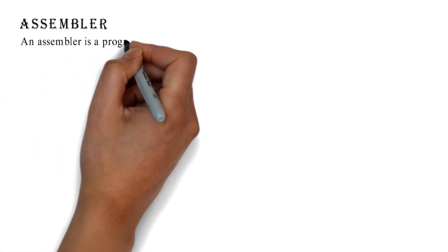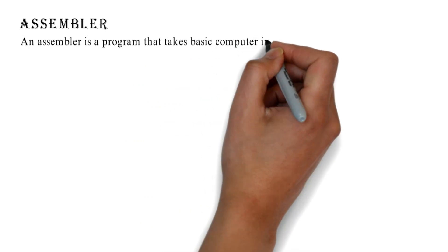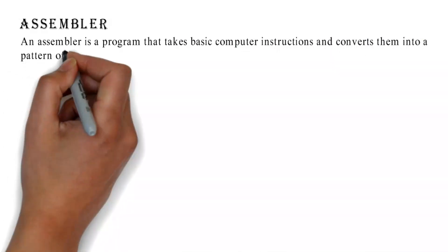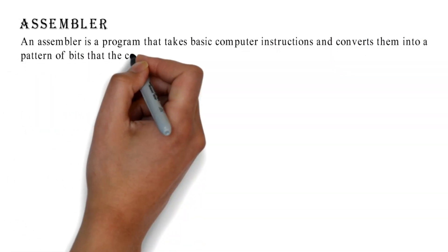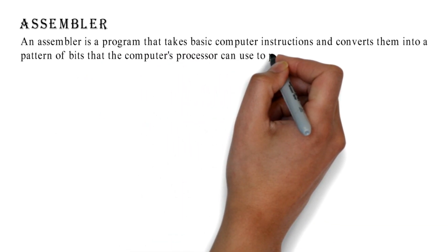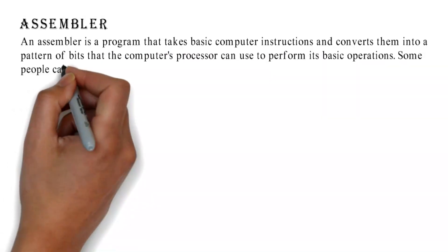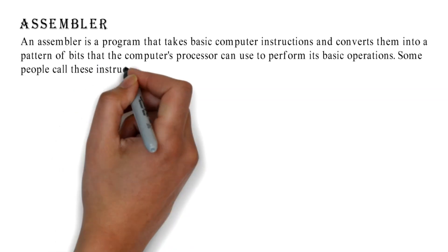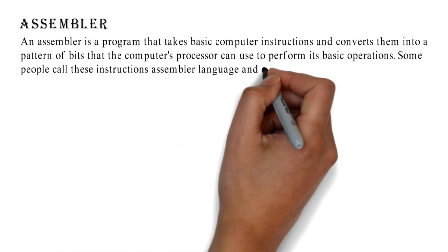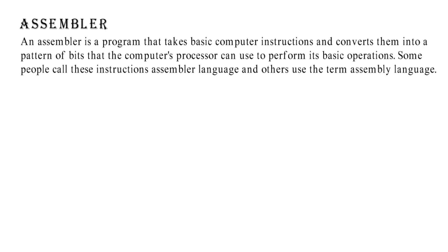An assembler is a program that takes basic computer instructions and converts them into a pattern of bits that the computer's processor can use to perform its basic operations. These instructions are referred to as assembler language or assembly language.